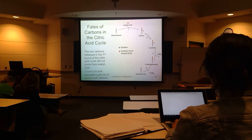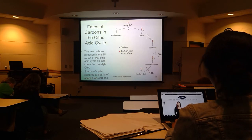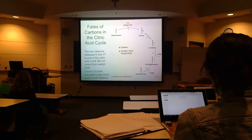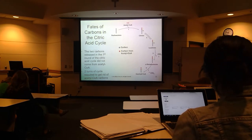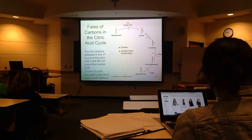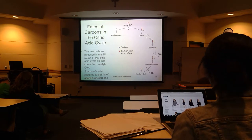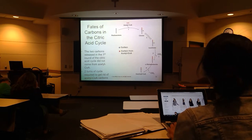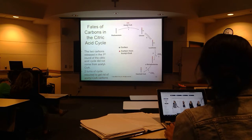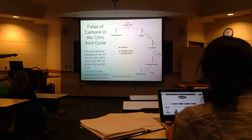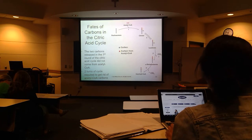Now, if I talk about yields, don't get confused — don't assume that the cycle has to go around twice. This would be specific only to a question about tracking the specific carbons. Just talking about where these carbons are actually leaving — they're not leaving in the first round from acetyl-CoA.